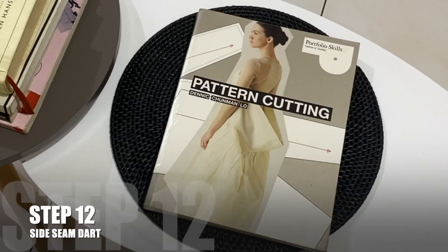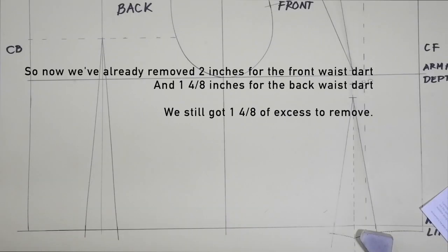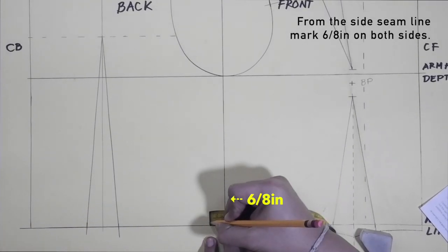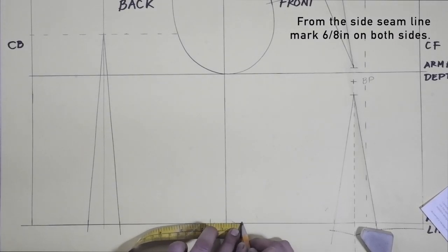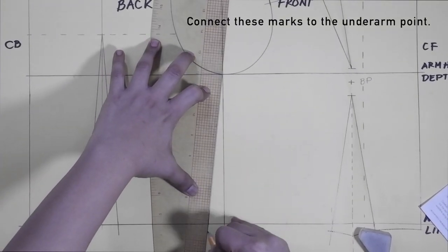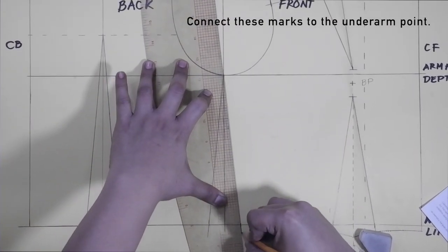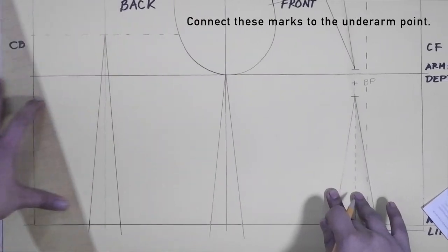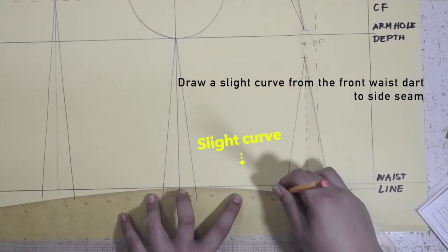Step twelve: side seam dart. We've already removed two inches for the front waist dart and 1 and 4/8 inches for the back waist dart. We still have 1 and 4/8 inches of excess to remove. From the side seam line, mark out 6/8 inch on both sides. Connect these marks to the underarm point.